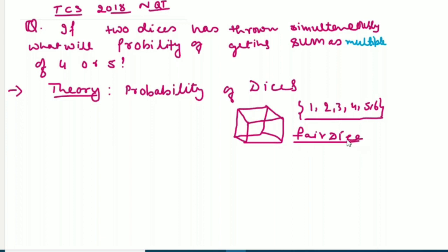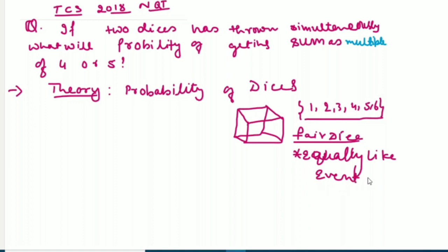We always talk about this fair dice in terms of probability. Whenever we talk about probability and dices, we always talk about a fair dice which has equally likely events. Whenever we say equally likely events, it means the chances of getting one, two, three, four, five, or six are all the same. The chances of coming all these numbers are same — that's what equally likely means.